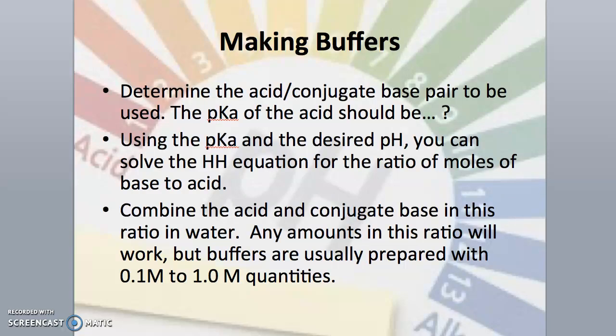When making buffers, it's important to know the approximate pH range that you want. The pKa of the acid in your buffer system, this is either the weak acid with its conjugate base, or it could be the conjugate acid of a weak base, must be within plus or minus one of the desired pH.